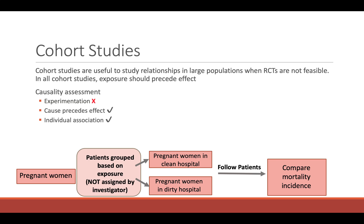If we review the causality assessment of cohort studies: again, because it's observational, there's no experimentation — we're not intervening or providing any treatment for those patients. We can look at cause preceding effect, and we can also look at individual associations.